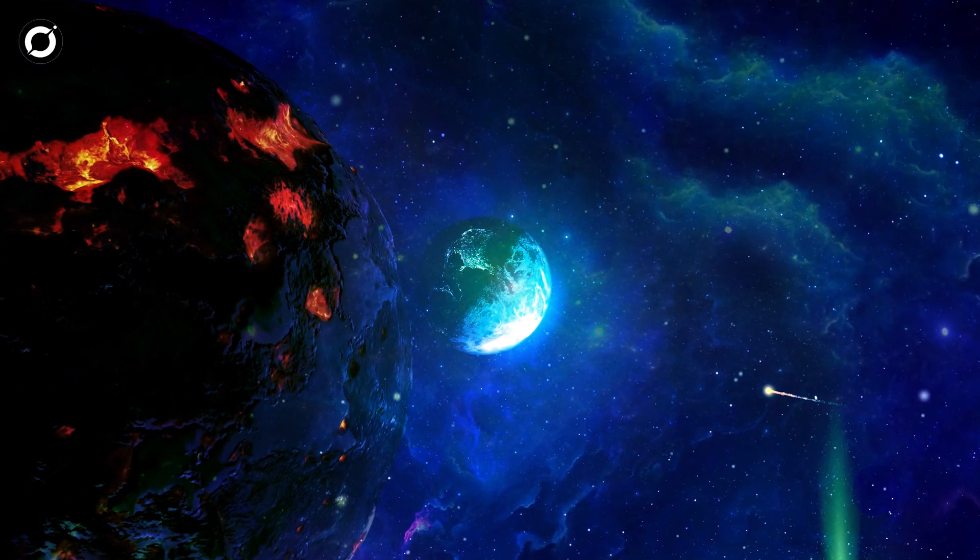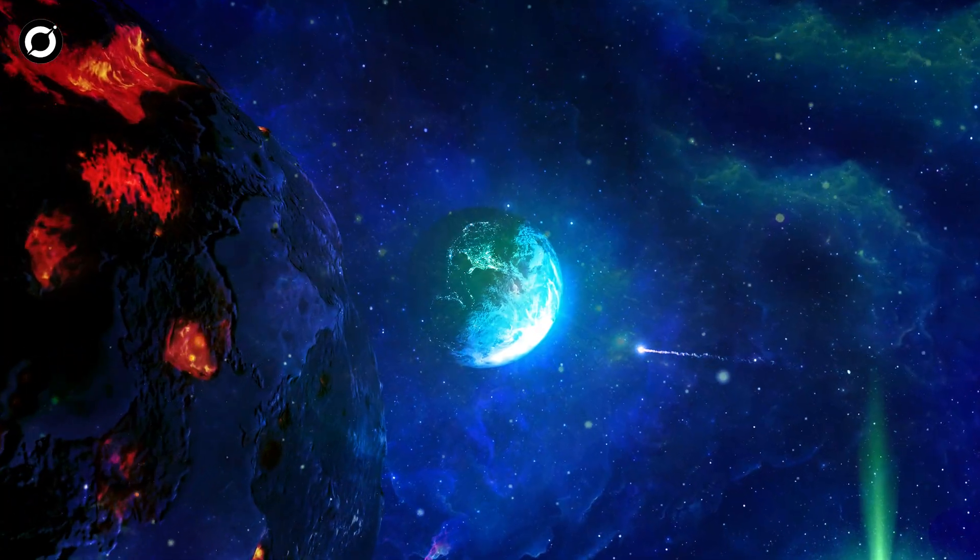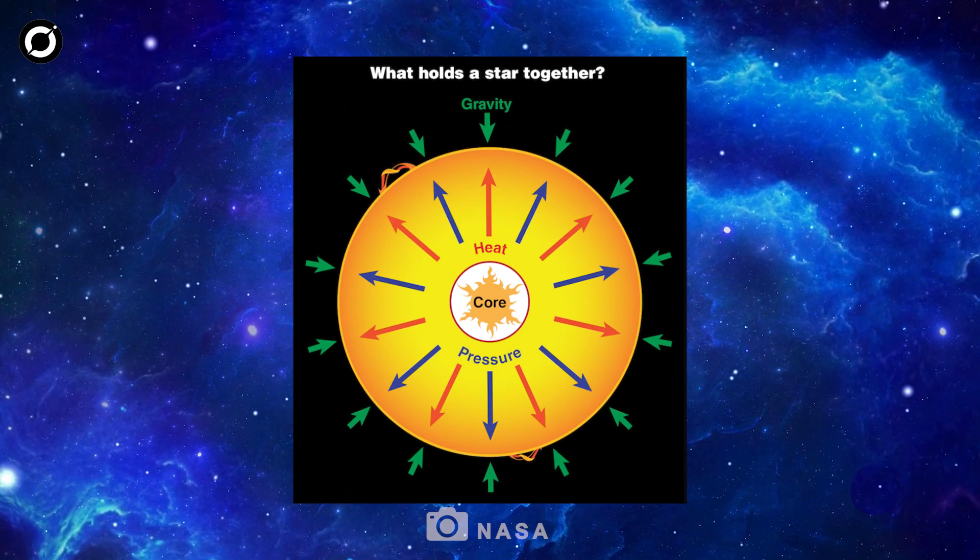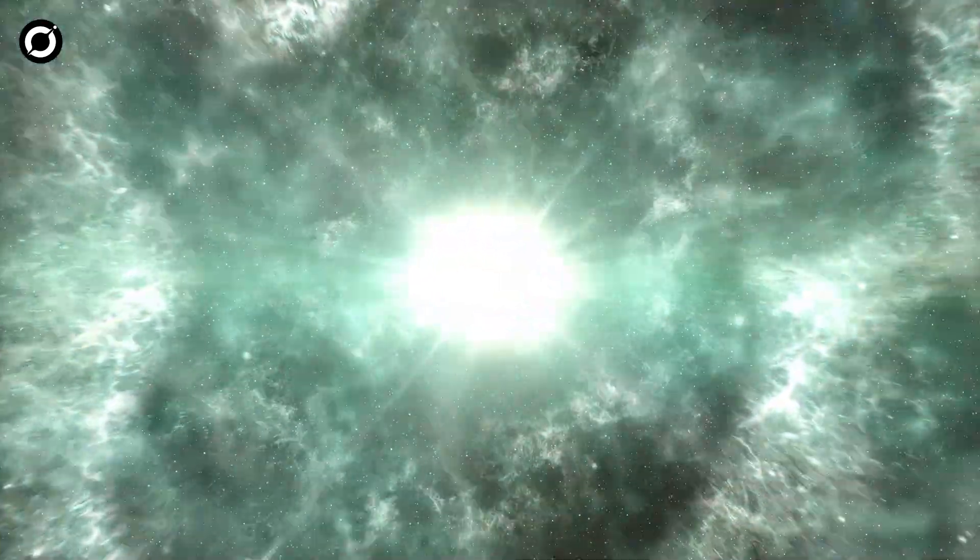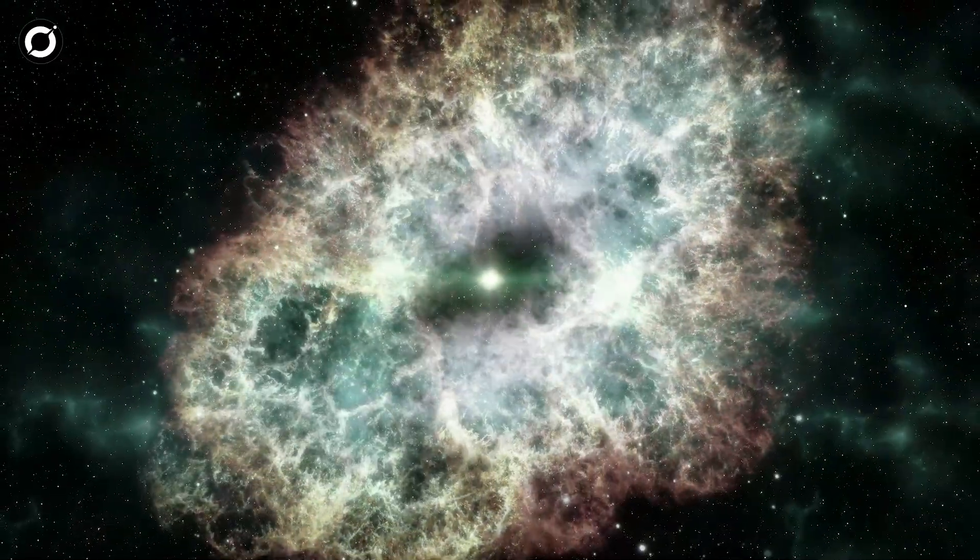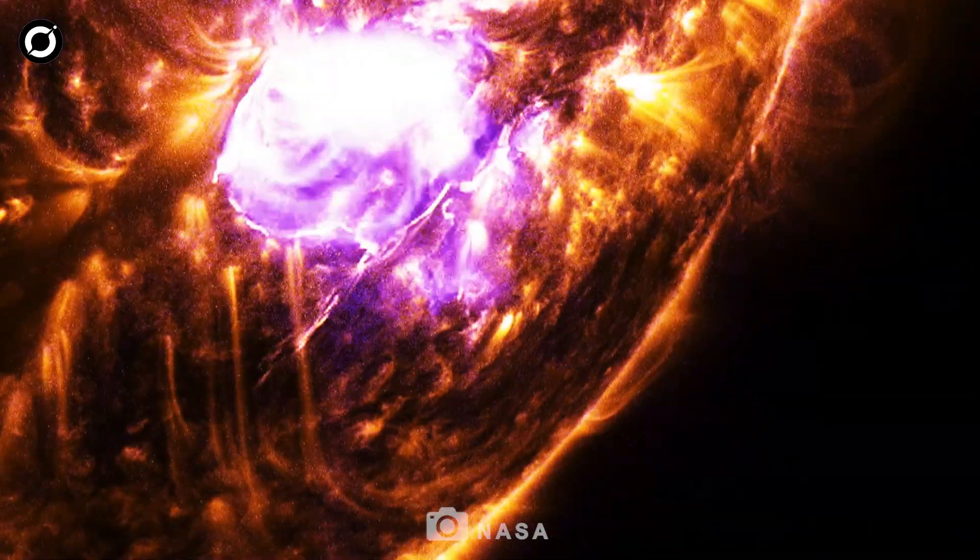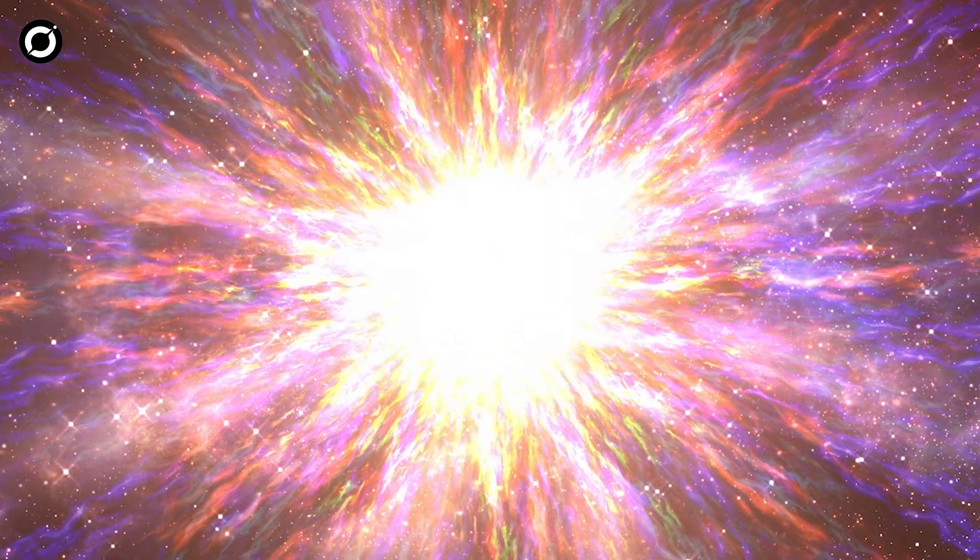A supernova is an astronomical event that marks the death of a massive star. It happens when a star runs out of fuel and can no longer hold up against the force of gravity. The core collapses, and the outer layers of the star explode outward with such power that it releases more energy than our sun will emit in its entire lifetime. But supernovae are incredibly rare.